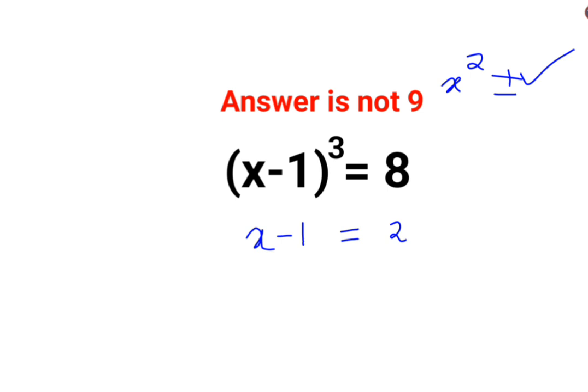So x minus 1 equals 2. Adding 1 on both sides, therefore, the value of x equals 3.